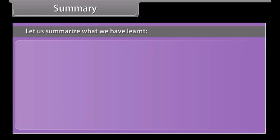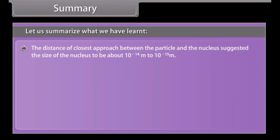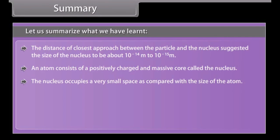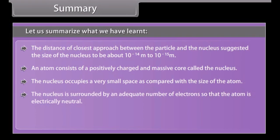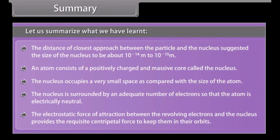Let us summarize what we have learned. The distance of closest approach between the particle and the nucleus suggested the size of the nucleus to be about 10 raised to the power minus 14 meter to 10 raised to the power minus 15 meter. An atom consists of a positively charged and massive core called the nucleus. The nucleus occupies a very small space as compared with the size of the atom. The nucleus is surrounded by an adequate number of electrons so that the atom is electrically neutral. The electrostatic force of attraction between the revolving electrons and the nucleus provides the requisite centripetal force to keep them in their orbits.